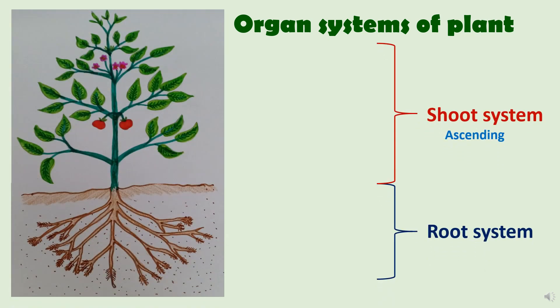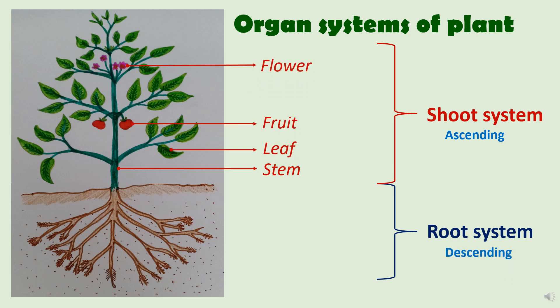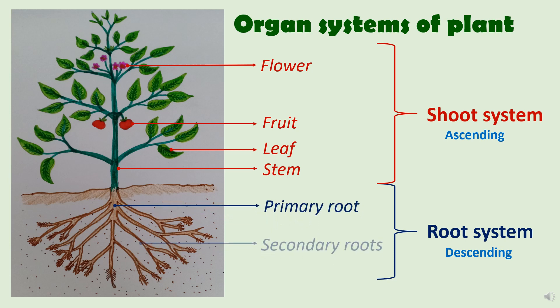The shoot system is the ascending portion of the plant — it grows upward and above the ground. It consists of stem, leaf, fruit, and flowers. Whereas the root system is the descending portion of the plant — it grows downward and under the ground. It consists of the primary roots, which give rise to secondary and tertiary roots.